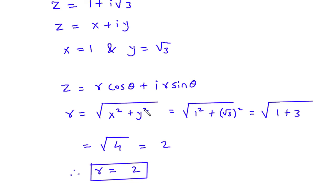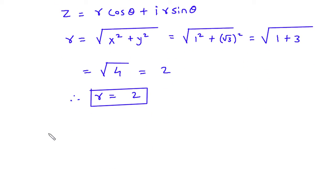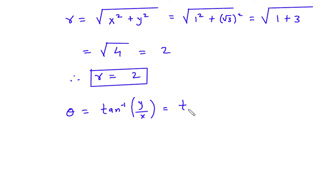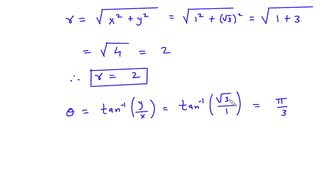Next we have to find the value of theta. Theta is equal to tan inverse of y by x. Now y is root 3 and x is 1, so this will be tan inverse of root 3 by 1. Therefore theta is equal to pi by 3, because tan inverse of root 3 is pi by 3. Now we have the value of theta which is equal to pi by 3.